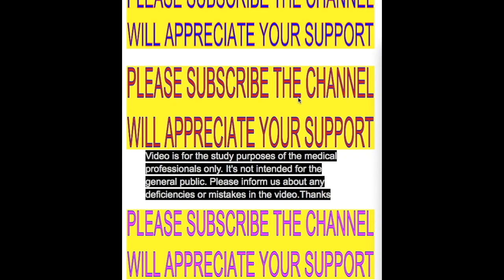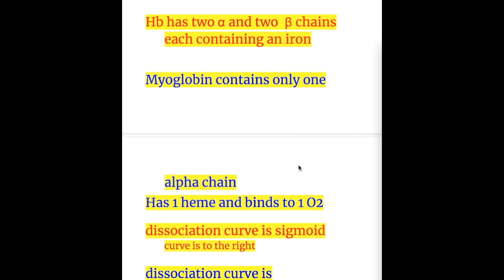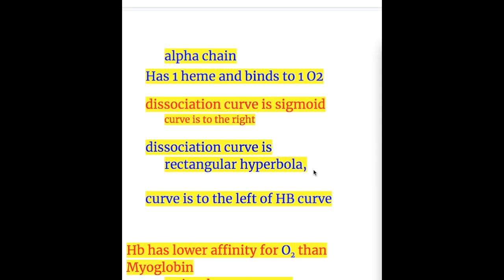In this video we'll compare hemoglobin with myoglobin. Hemoglobin circulates in the blood inside the RBC, whereas myoglobin is found in the skeletal and cardiac muscles. Hemoglobin has two alpha and two beta chains, each containing an iron, and carries four oxygen. Myoglobin contains only one alpha chain, has one heme, and binds to one oxygen.